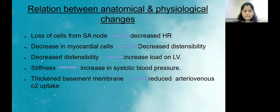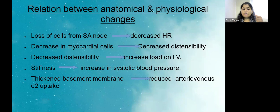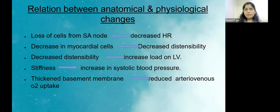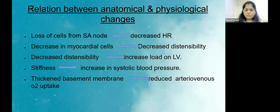Stiffness is the anatomic change responsible for an increase in systolic blood pressure. If the arterial system is stiffened and the heart is also pumping blood against stiff arteries, the complete pressure in the system increases, resulting in increased systolic blood pressure. Additionally, the thickened basement membrane increases the barrier for gaseous exchange, leading to reduced oxygen uptake.